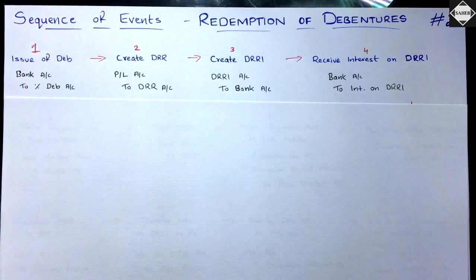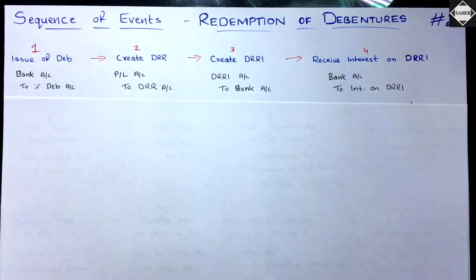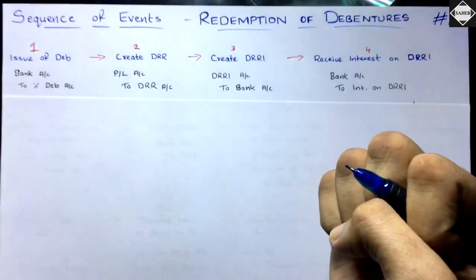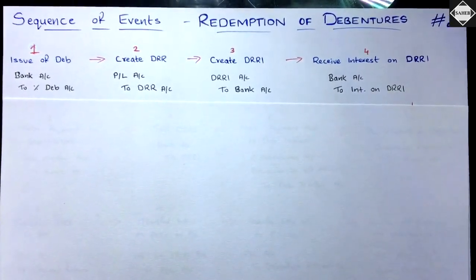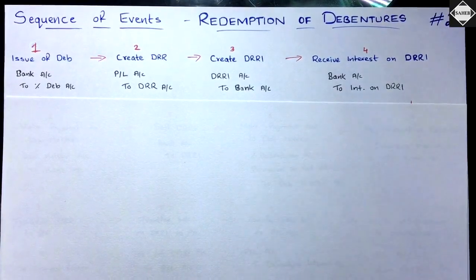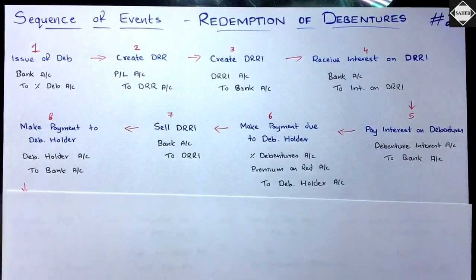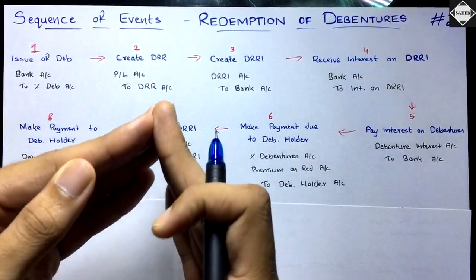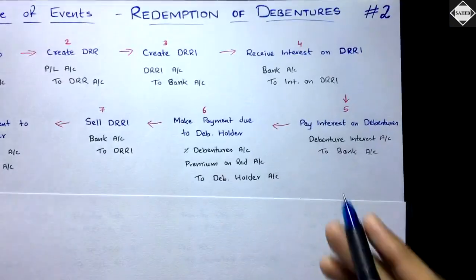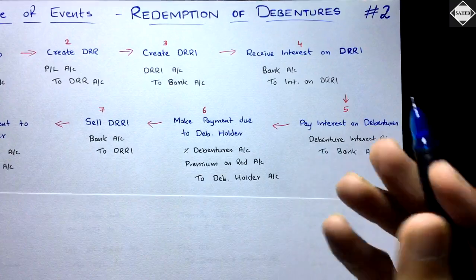The DRRI will earn interest. Entry for receiving interest: Bank Account debit, Interest on DRRI Account credit — you receive income and money comes in. This is a nominal income account that must be closed at the end. Next event: Pay interest to debenture holders. Entry: Debenture Interest Account debit, Bank Account credit. This is an expense paid half-yearly (every six months), so this entry will typically appear twice, with due dates given in the question.